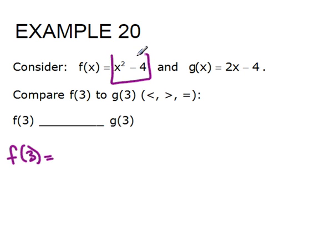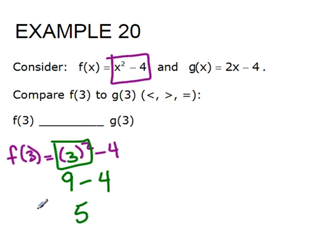So I'm going to take this function, but remove the variable so that I can substitute the value of 3. So 3 squared is 9, and 9 minus 4 is 5. So f of 3 equals 5.